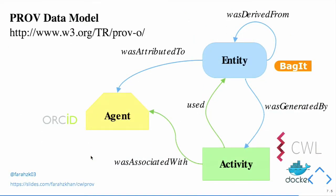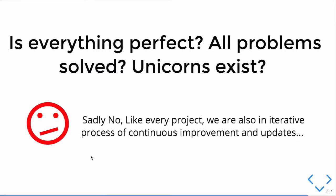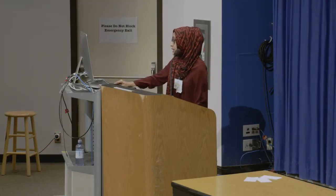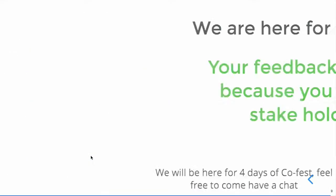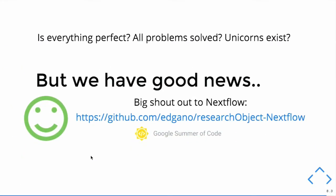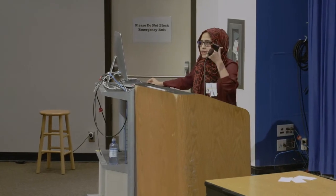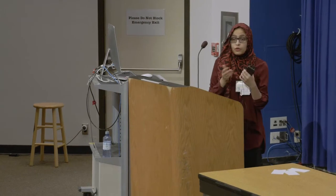This is the PROV model we are using. Is everything perfect? Are all problems solved? No. Like every project, we are in a continuous iterative process of improvements and updates. Until level two we have achieved everything; we are still working toward level three. A big shout out to Nextflow — they are also doing a research object implementation for Nextflow as a Google Summer of Code project, doing provenance in a similar way. Your feedback matters because you are the stakeholder. We're here for the next four days, so please share as much feedback as possible.